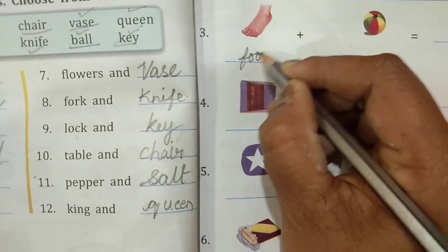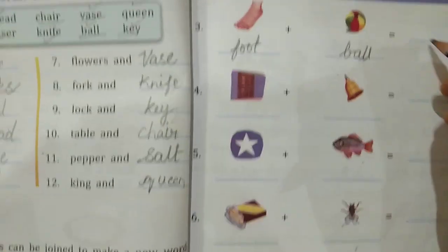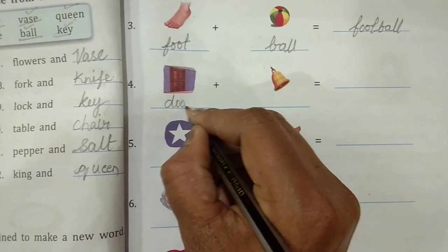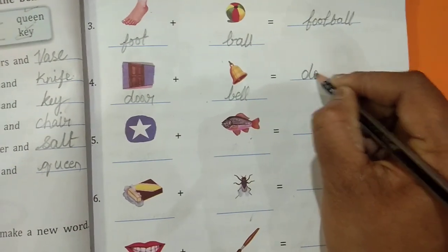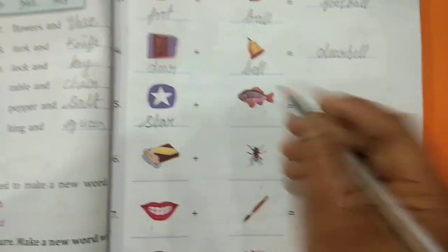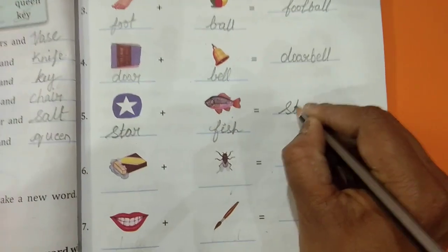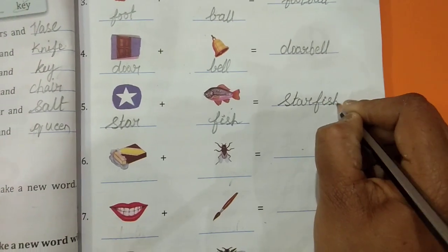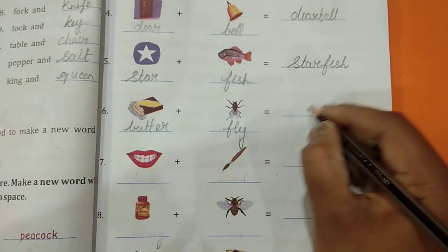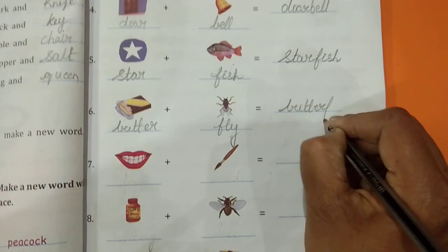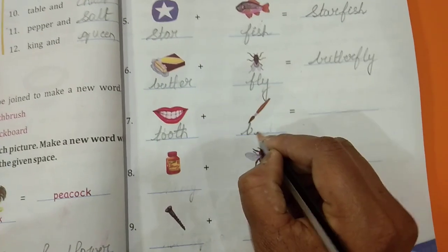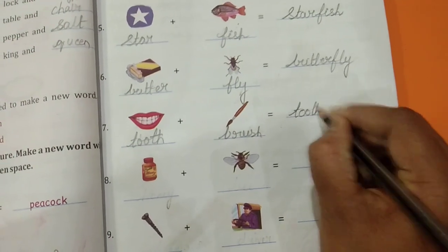Next, foot plus ball, football. Next, door plus bell, doorbell. Next, star plus fish, starfish. Next, butter plus fly, butterfly. Next, tooth plus brush, toothbrush.